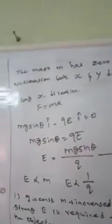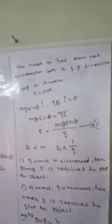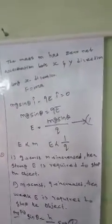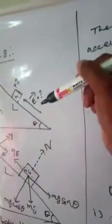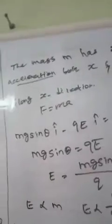Next, we have zero net acceleration in both x and y directions. Along the x-direction, applying Newton's second law: F equals ma. The forces along x-direction are Mg sinθ and QE.